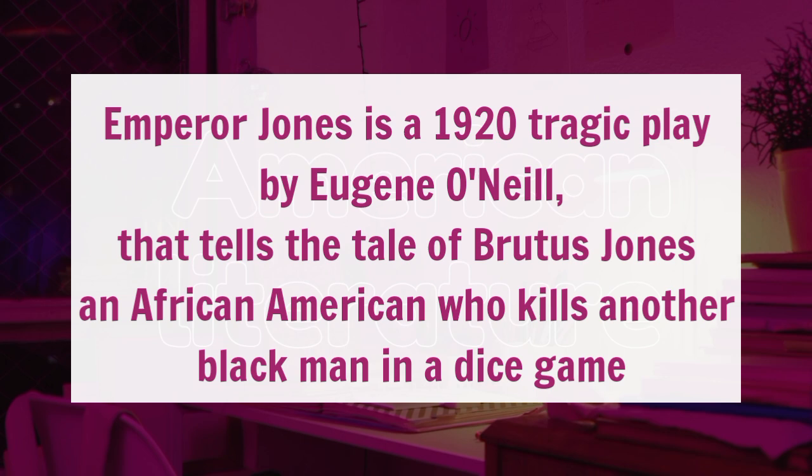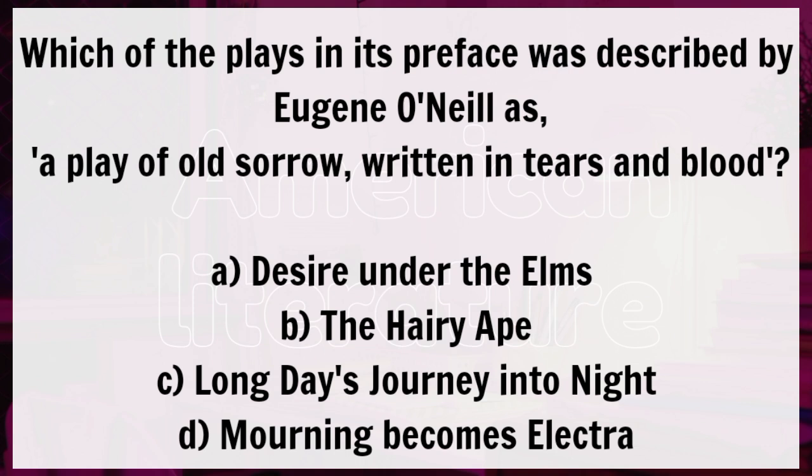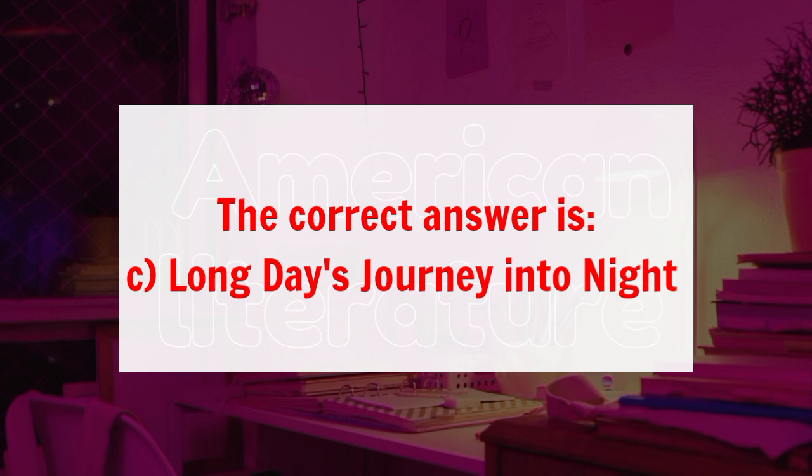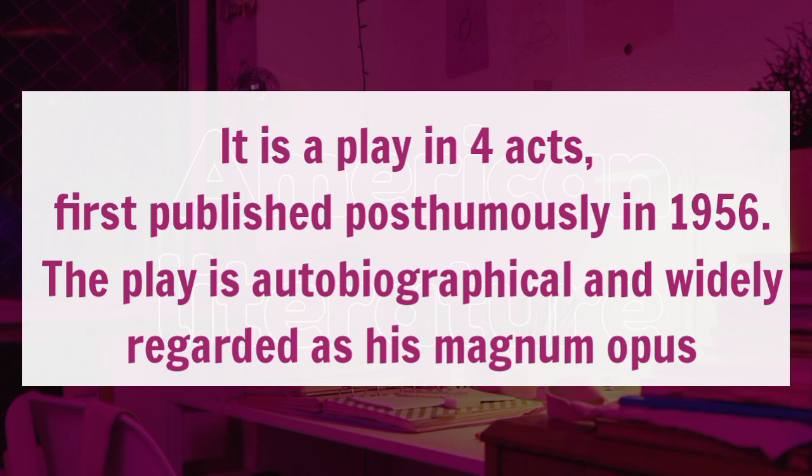Question 16: which of the plays in its preface was described by Eugene O'Neill as a play of old sorrow written in tears and blood? Option A, Desire Under the Elms. B, The Hairy Ape. C, Long Day's Journey Into Night. D, Mourning Becomes Electra. Here the correct answer is Option C, Long Day's Journey Into Night. It is a play in four acts, first published posthumously in 1956. The play is autobiographical and widely regarded as his magnum opus.